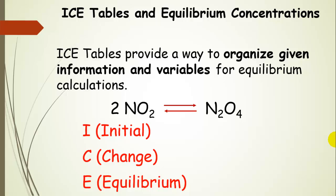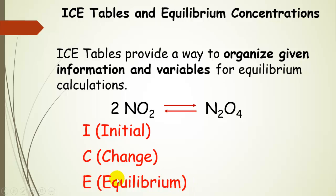To set up an ICE table, we write the reaction at the top with the equilibrium double arrows, then we label three rows: I, C, and E. I stands for initial — those are your initial conditions. C is for change — that is the shift the reaction takes on its way to equilibrium. And E is for equilibrium — what we have at equilibrium.